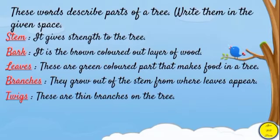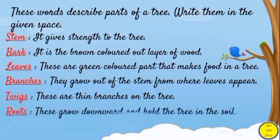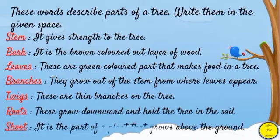Next one: fruit. Roots — these grow downward and hold the tree in the soil. Next part is shoot — it is the part of a plant that grows above the ground.